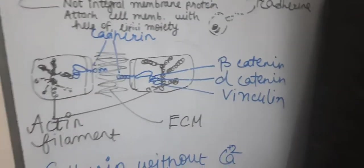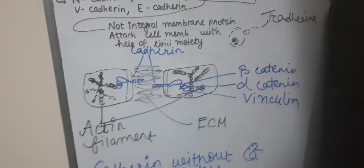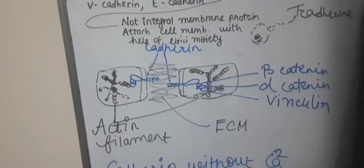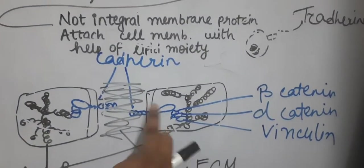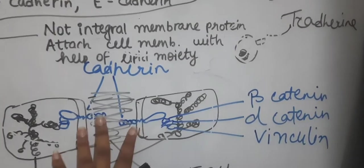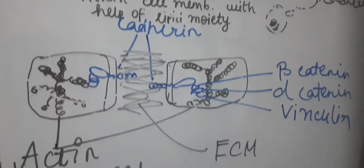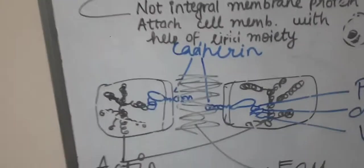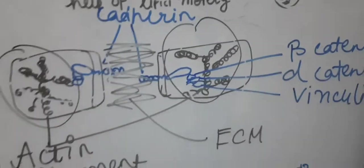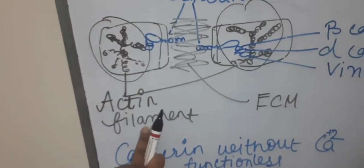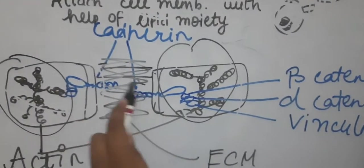Two different cells - so say this is cell number one and this is cell number two. Now inside both the cells cadherin is present. Now this blue structure you see, this and this, these are cadherin, so cadherin is present in both of them.